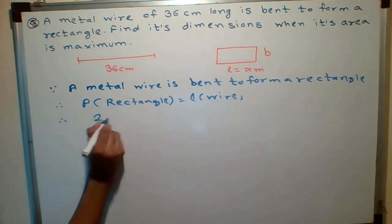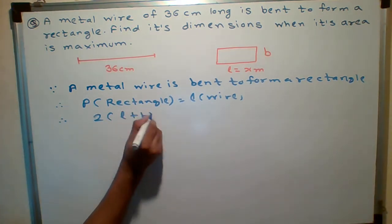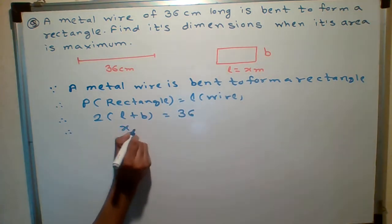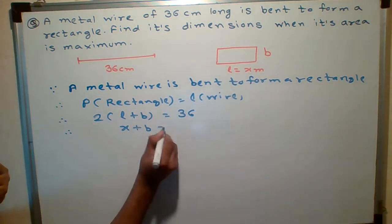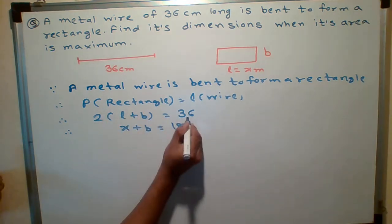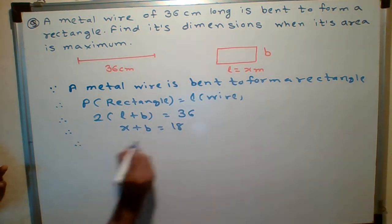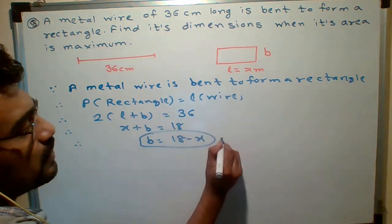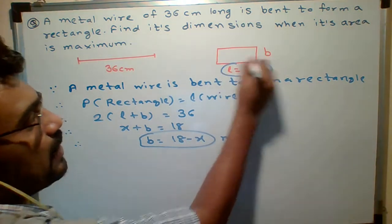So what is perimeter of rectangle? 2 times of length plus breadth, and what is length of wire? 36 cm. So I have considered the length of x, breadth I don't know. And here will be 18 divided by, 36 divided by 2 is 18. So what is breadth equals to 18 minus x. So we got breadth and we got L also.